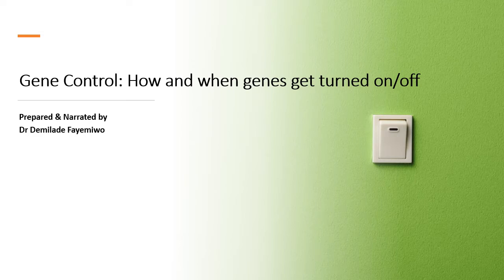For gene control, we are going to discuss how prokaryotes — things like bacteria — and eukaryotes — things like us or plants — control genes. The biggest thing to know is that genes are not turned on all the time. Some genes are expressed based on whether or not they are needed, and that is what we're going to speak about in this section.